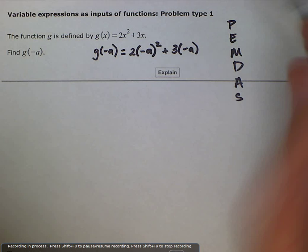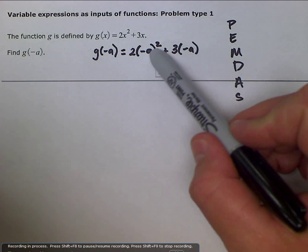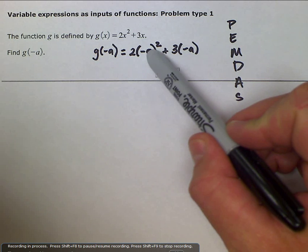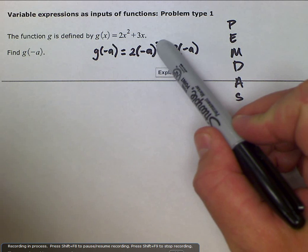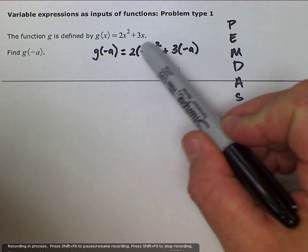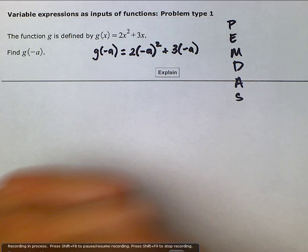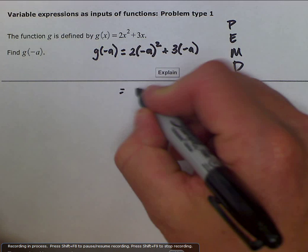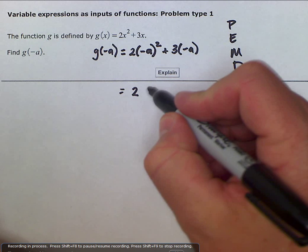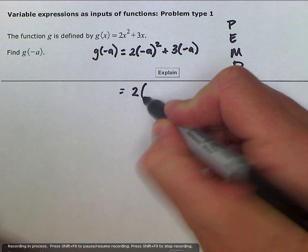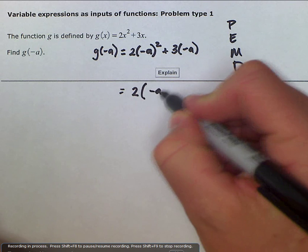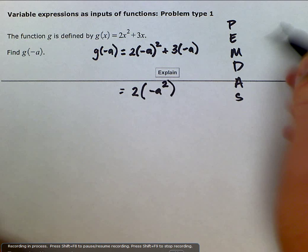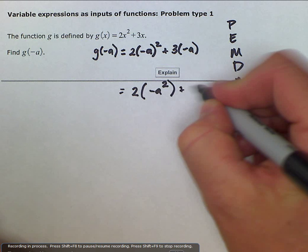So make sure that you raise this negative a to the second power before you multiply by 2. So we would rewrite this as 2 times negative a squared plus 3 times negative a.